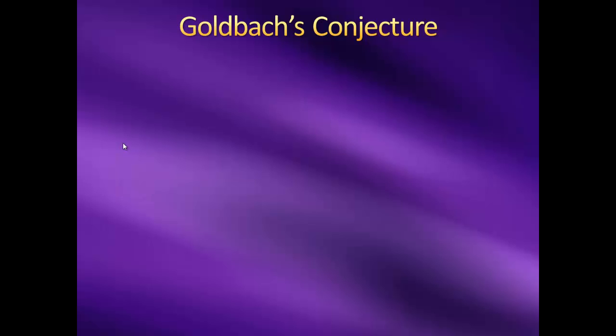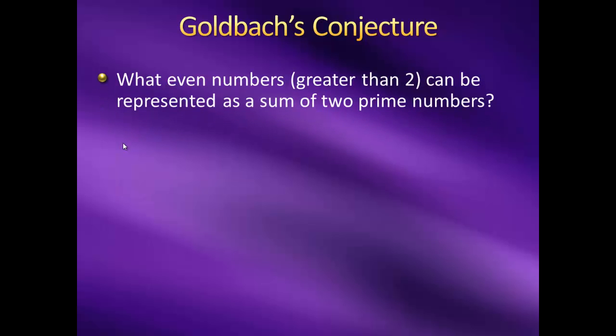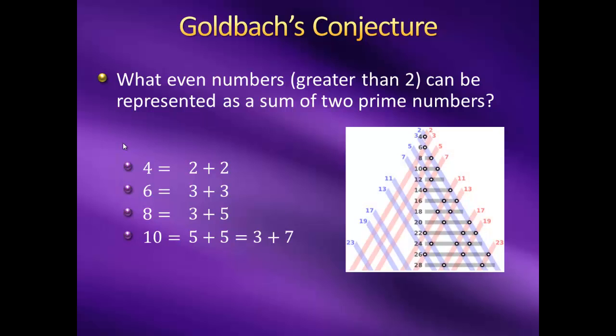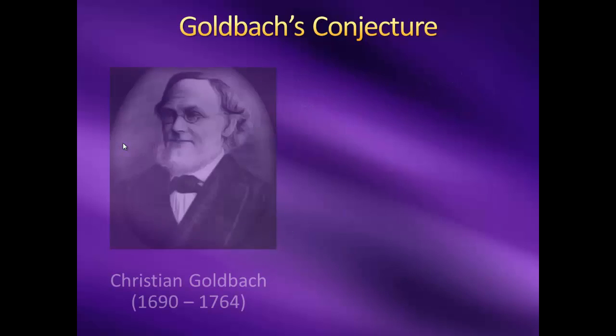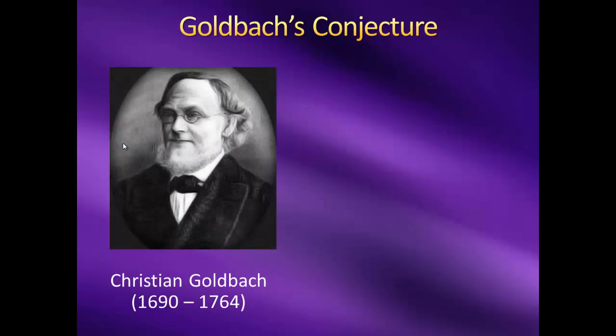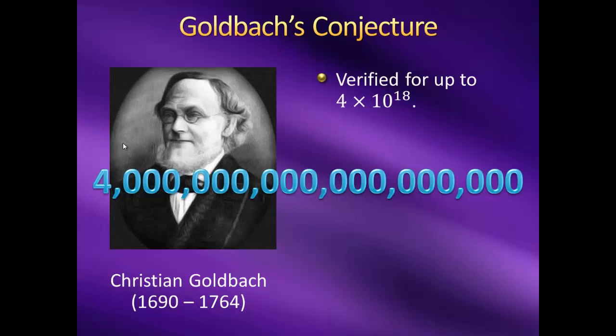One well-known conjecture that remains unsolved to this day is the Goldbach conjecture, insidious in its simplicity. Given an even number, which ones can be represented as a sum of two prime numbers? Let's look at some examples. 4 equals 2 plus 2, 6 equals 3 plus 3, 8 equals 3 plus 5, and 10 equals 5 plus 5, or 3 plus 7. So we can see that some even numbers can be made by adding two primes. Well, German mathematician Christian Goldbach conjectured that it's possible to represent all even numbers greater than 2 in such a way. The conjecture's been verified for all even numbers up to 4 times 10 to the 18th power. That's 4 quintillion. But so far, nobody has managed to come up with a definitive proof. We'll see just how elusive prime numbers are later on in the course.